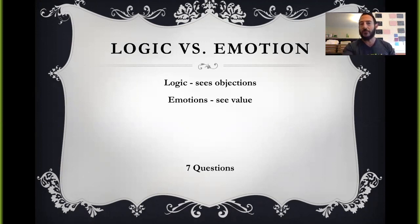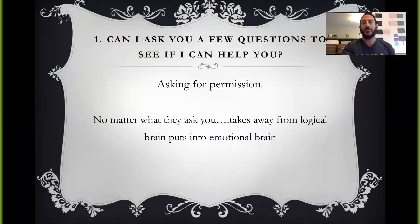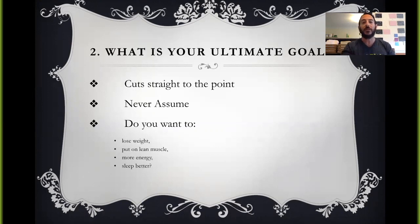And so there's seven basic questions. And I'll go through these with you and then you can practice on your own. The first question is, no matter what your prospect says to you, how much is the program? What is the program? Whatever it is, can I ask you a few questions to see if I can help? That's number one. We want to ask for permission. No matter what they ask you, this starts to remove or push aside that logical brain and it steers them towards that emotional place.